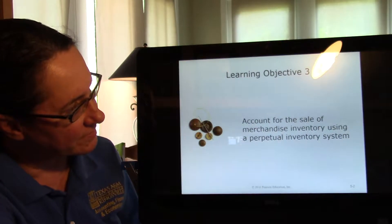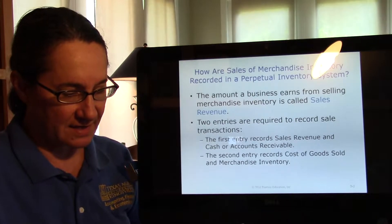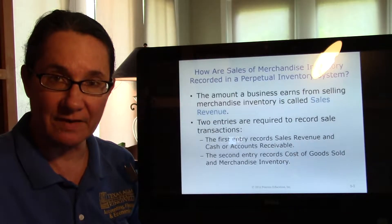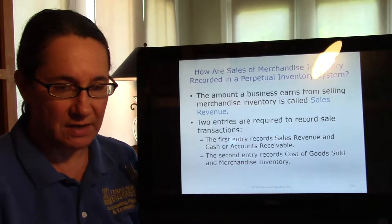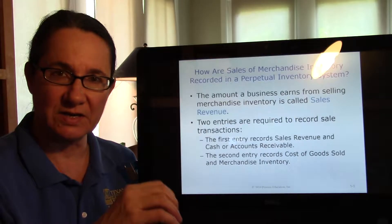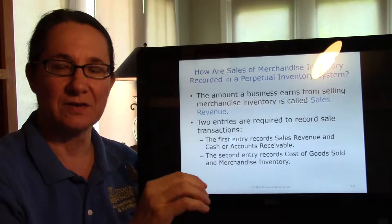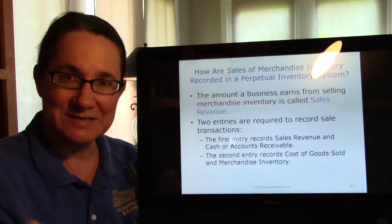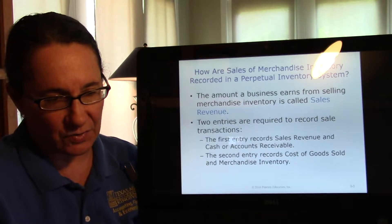We're going to learn about inventory systems. We've learned so far that retailers purchase inventory from vendors, and they turn around and sell inventory to customers. So it's important to keep that purchase and sale thing distinguished because there's purchase discounts and purchase returns, but when you deal with customers, there's sales discounts and sales returns. Don't get those confused — purchase from a vendor, sell to a customer.